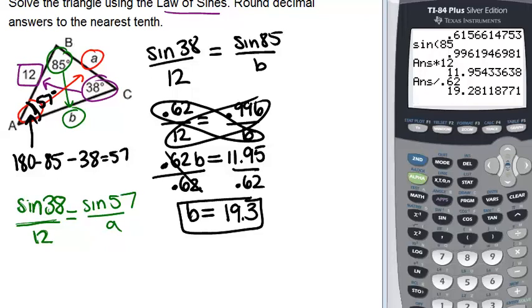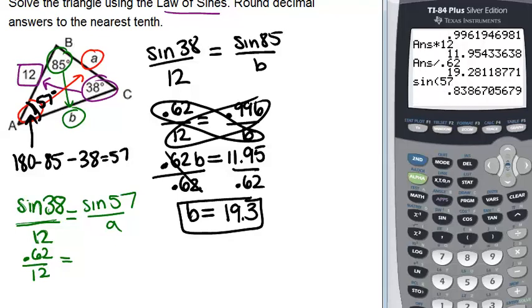So we're going to solve this the same way. We already know that sine of 38 is 0.62, and now we want to figure out the sine of 57 on the calculator. So sine of 57 is 0.84 approximately. So we'll write that for now and leave that in our calculator.